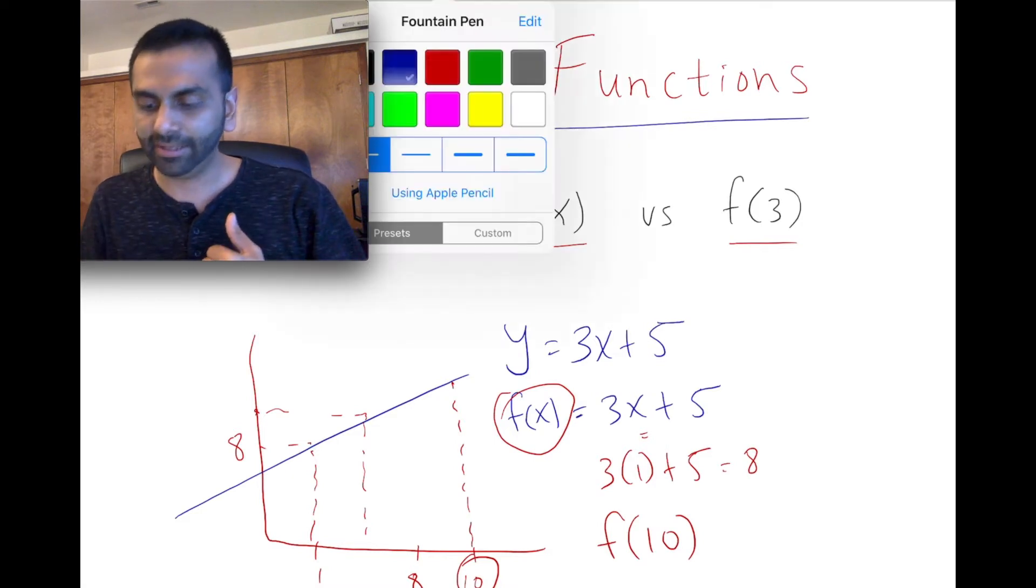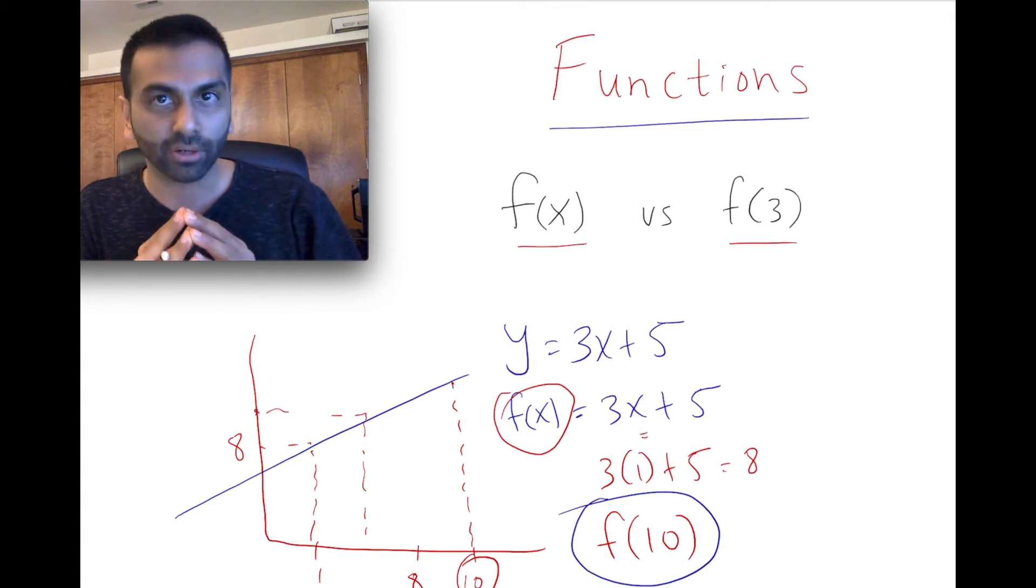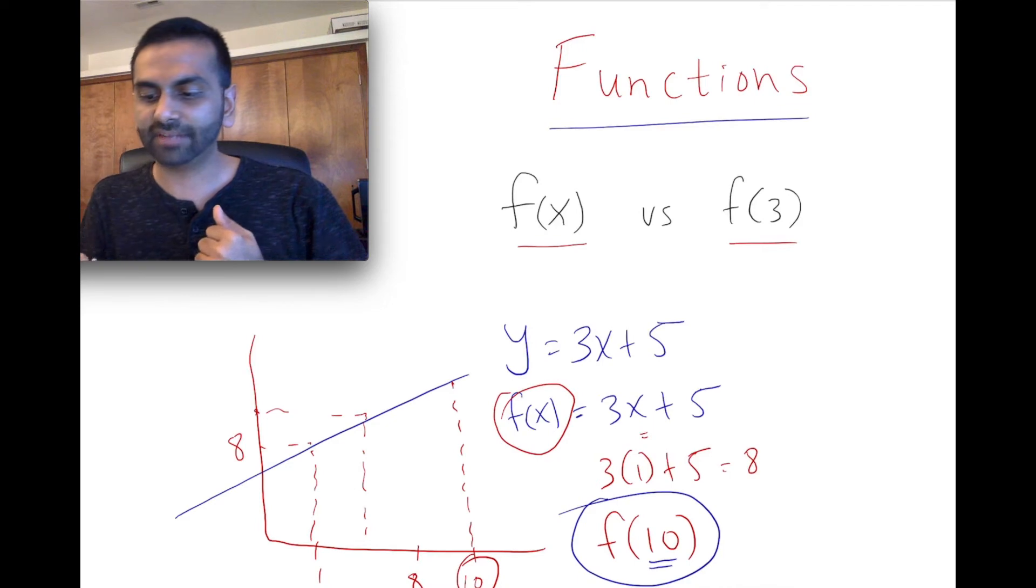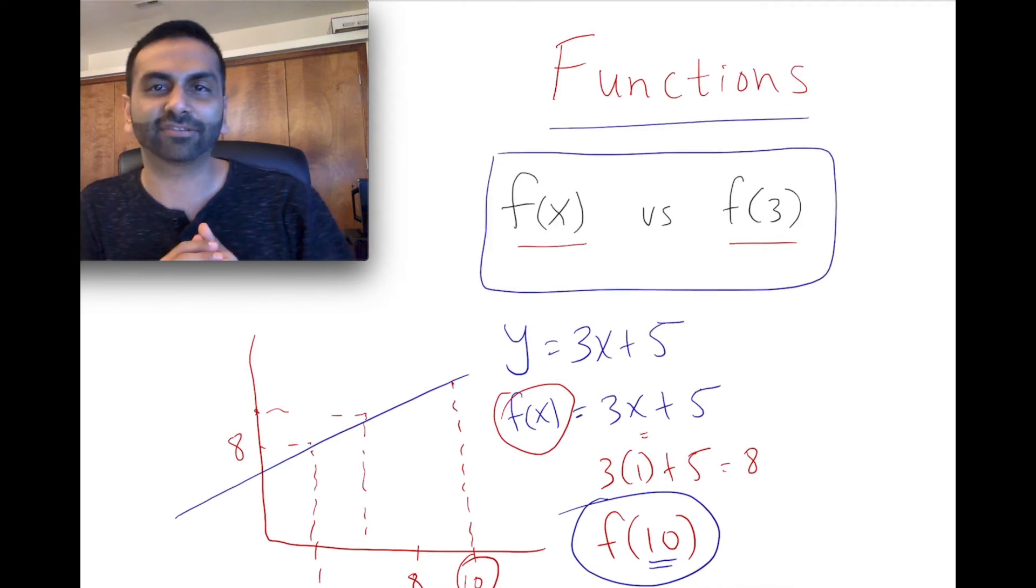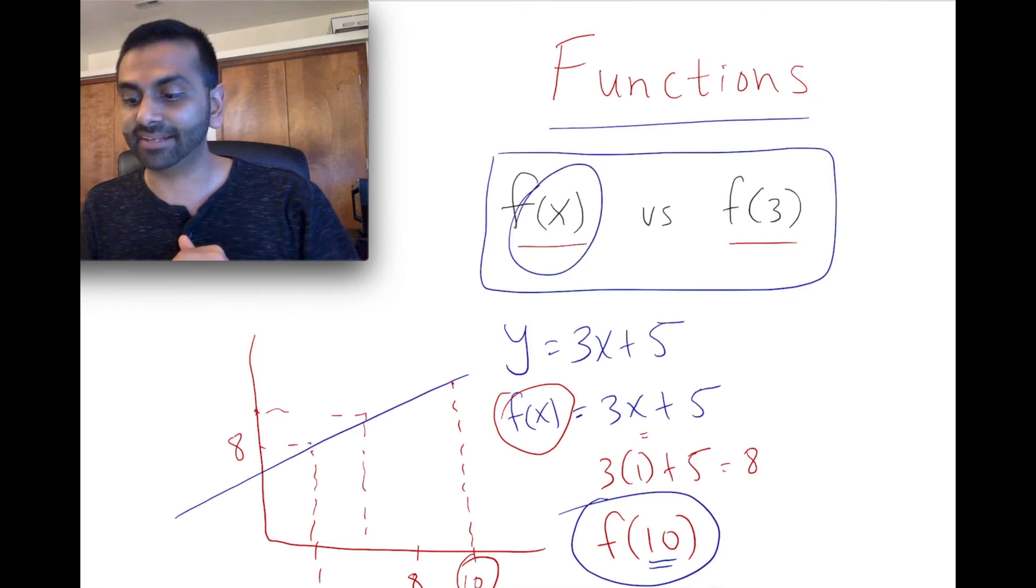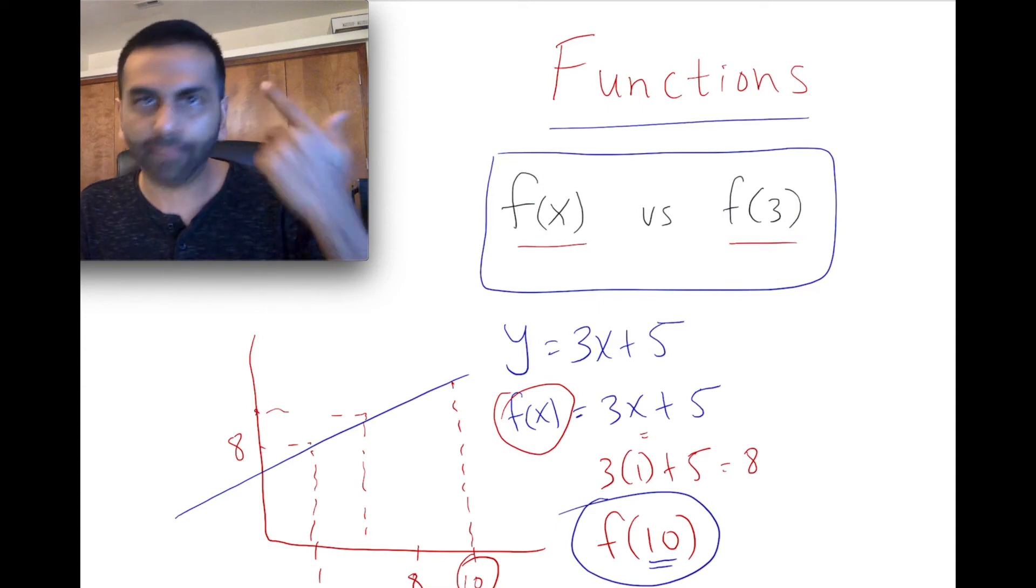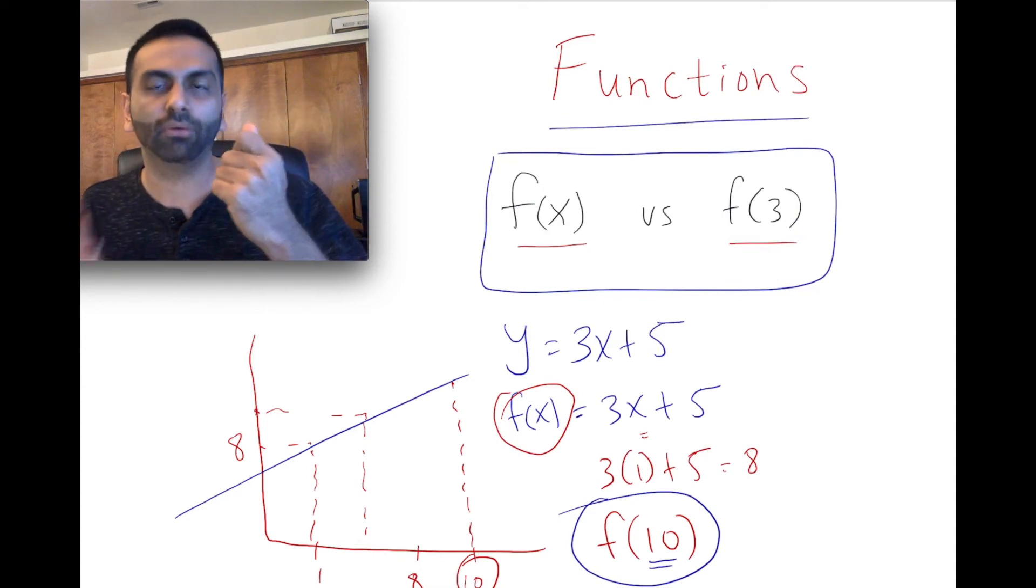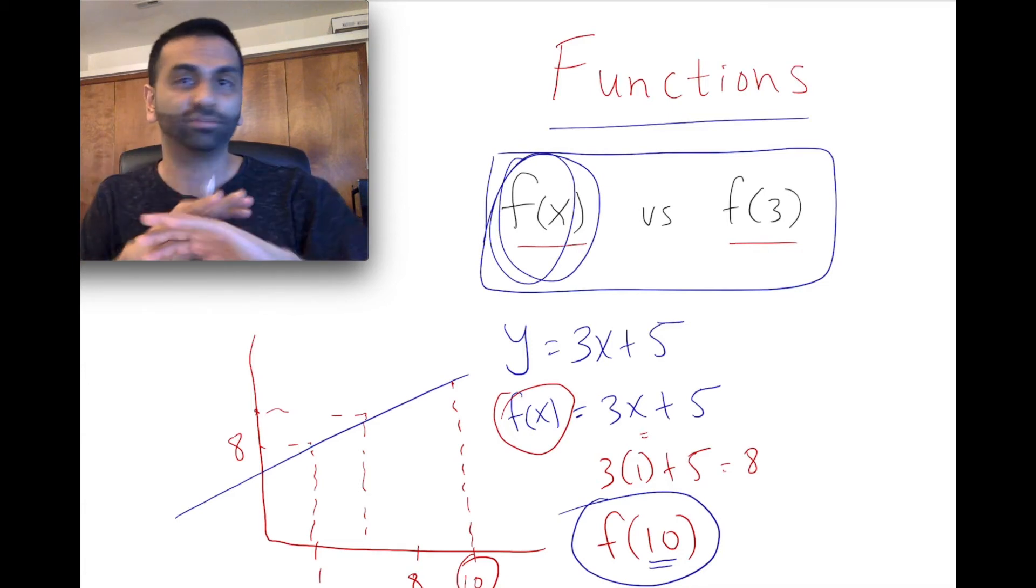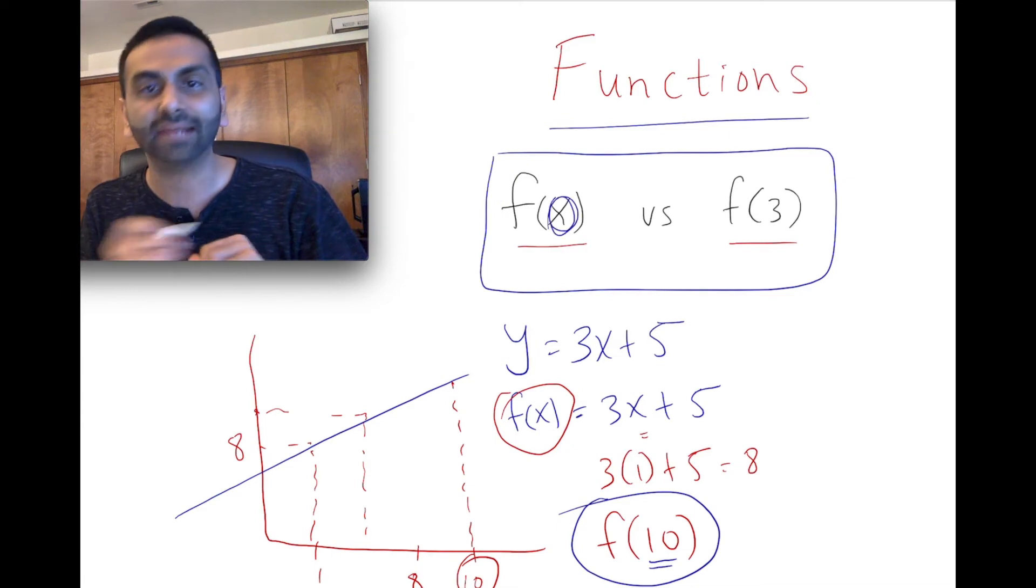So what does f of 10 mean? When you look at f of 10, that's basically a number. That is specifically the y value when x is 10. So that's the difference. If you were to look at this f(x) versus f(3), big picture, one of these guys is an equation. The other is a number. So f(3) is a number. It's a specific output when x is 3. This guy though is the equation. It's representing what you do to any generic thing that you would hypothetically input.